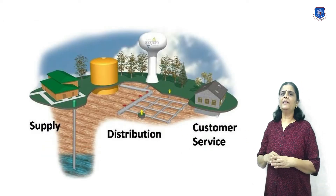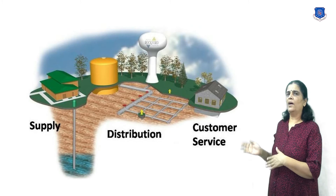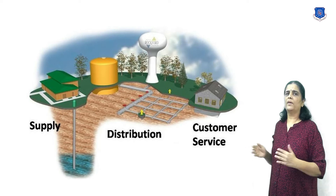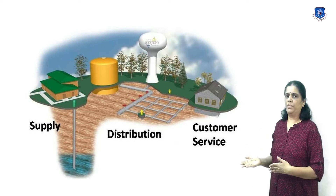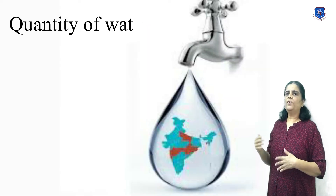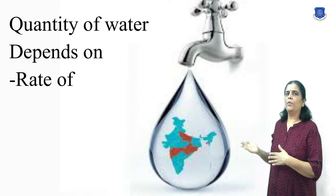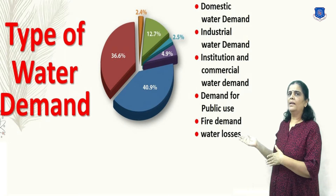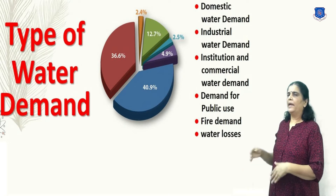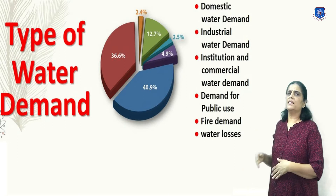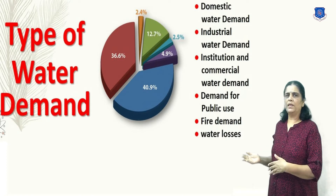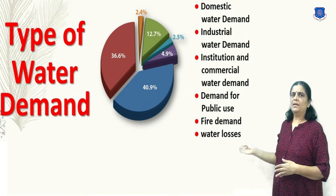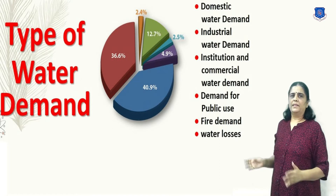While designing the water supply system for a town or city, it is necessary to determine the total quantity of water required for various purposes. The quantity required for a city depends on the rate of demand and population. Types of demands include domestic water demand, industrial and commercial water demand, demand for public uses, fire demand, and losses demand.